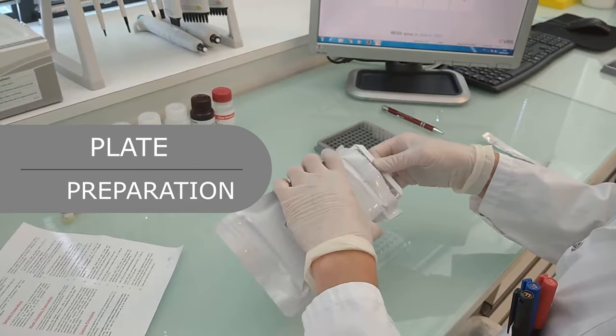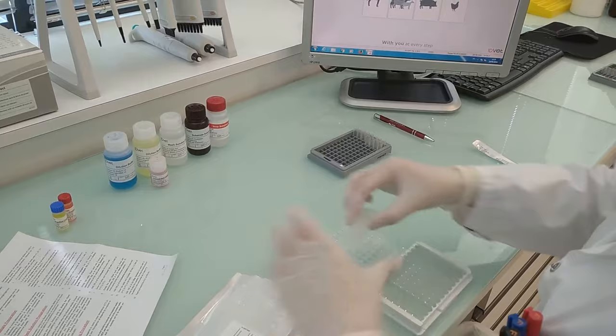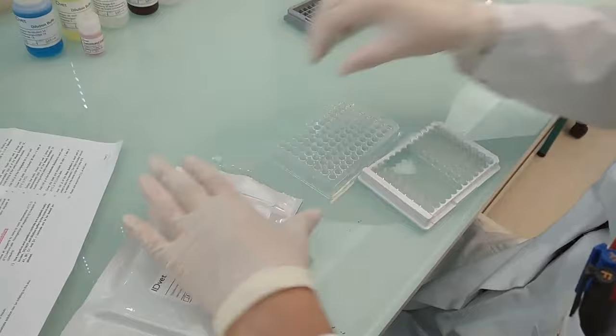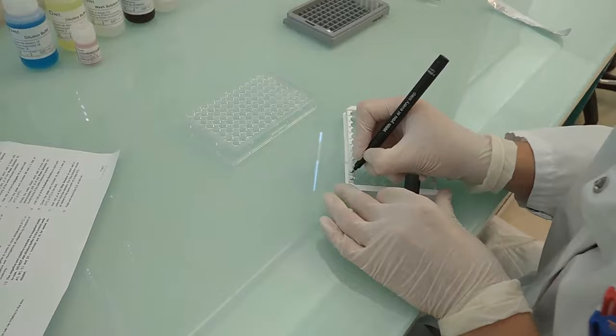Plate preparation: The IDVet ELISA kits can be supplied in whole plate or strip plate formats to suit your testing volumes. In this run, the strip plate format is used. The remaining strips are being kept aside for future tests. Do not forget to identify your strips for good traceability.